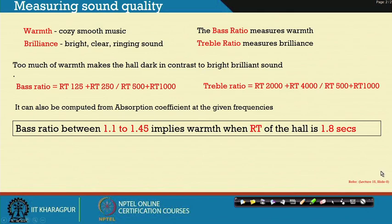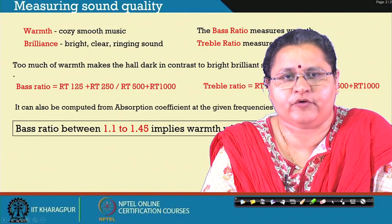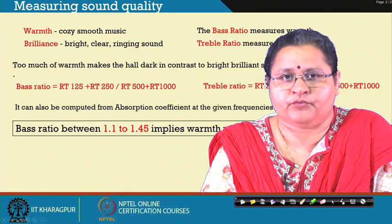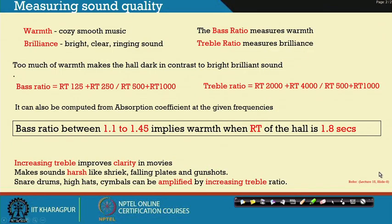Bass ratio between 1.1 to 1.45 implies warmth when the original RT at 500 and 1000 Hz is 1.6 seconds. Your desired bass ratio would mean RT at 125 and RT at 250 will be 1.1 to 1.8 seconds. Increasing the treble improves clarity, but for movie sound it makes the sound harsh — shriek, falling plates, gunshots become very harsh. Snare drums, hi-hats, and cymbals can be amplified by increasing the treble ratio.